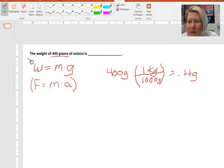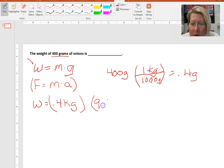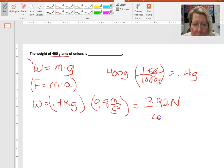Now we can, using this formula here, substitute in 0.4 kilograms and multiply that by gravity on earth, 9.8 meters per second squared. And when we do that we get 3.92 newtons or four newtons.